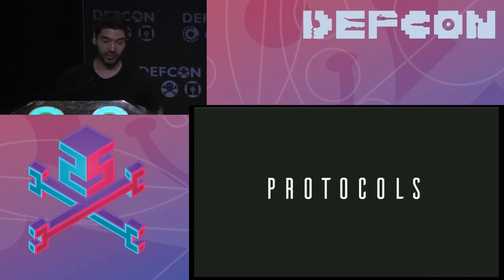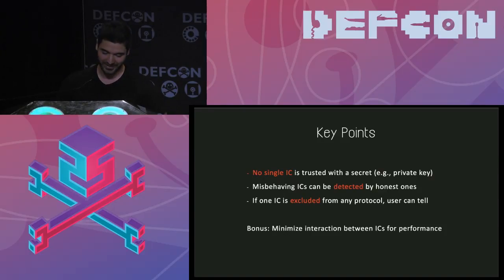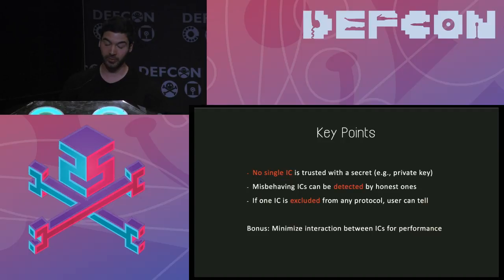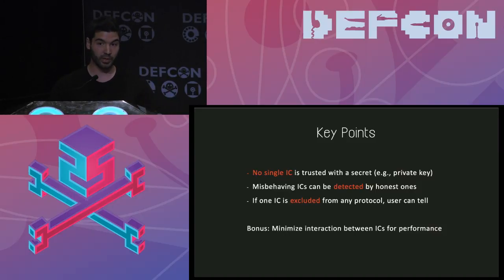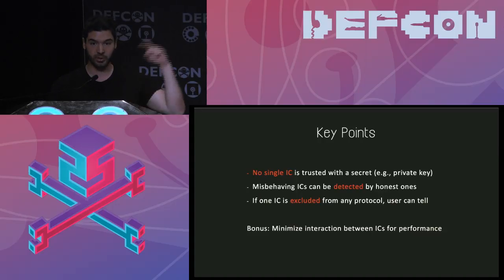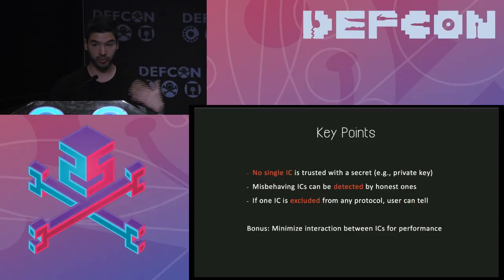A little bit more about the magic going on behind the scenes. There are three plus one key points we wanted for each algorithm used. First, there must be no single processor handling sensitive stuff such as secret keys at any time. Second, if one processor is misbehaving and actively attacking other processors, honest processors can detect that. Third, if an honest processor is excluded from the protocol execution, the user can tell that happened. And finally, we wanted a protocol that performs well, which we achieved.